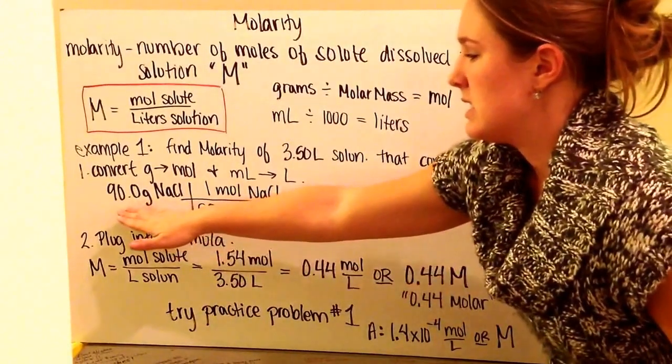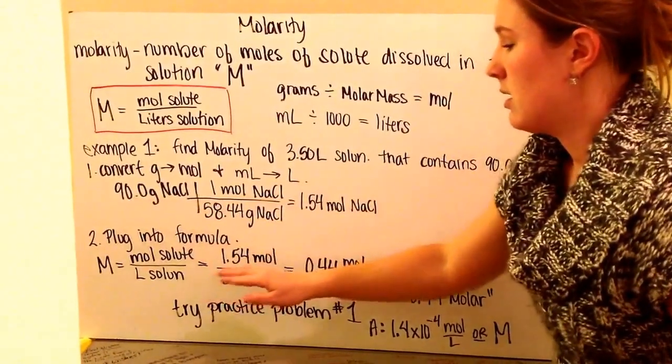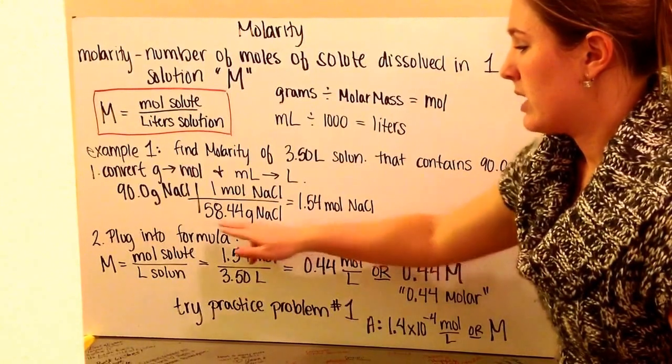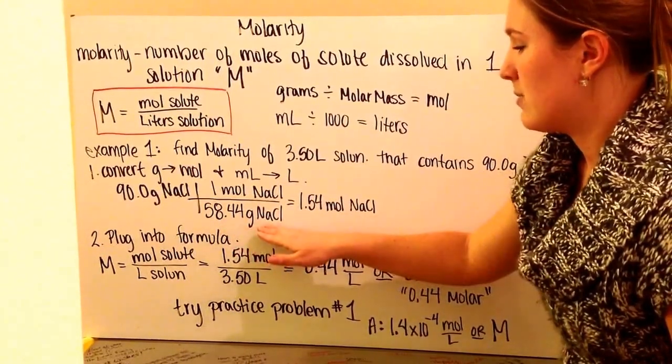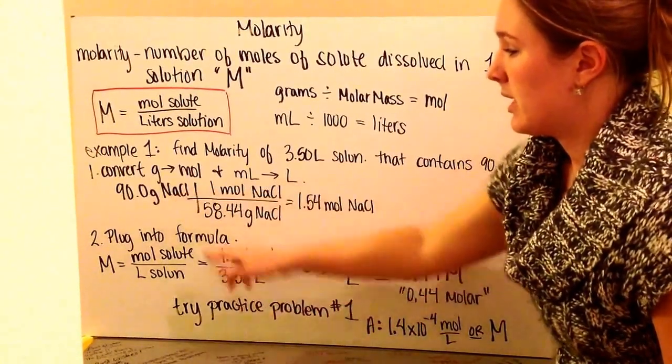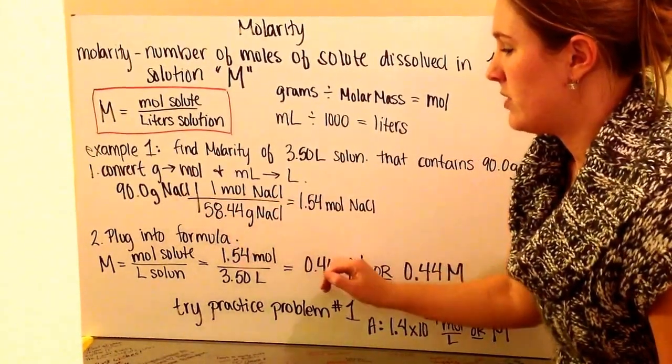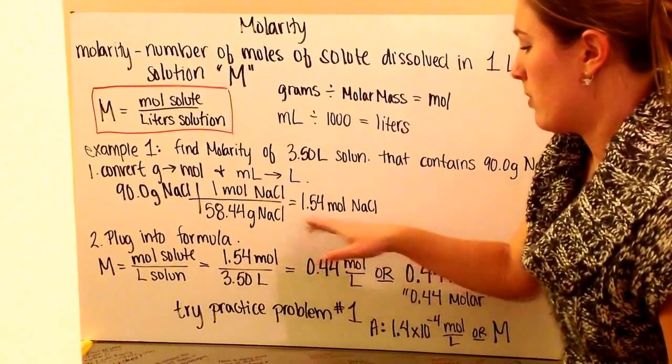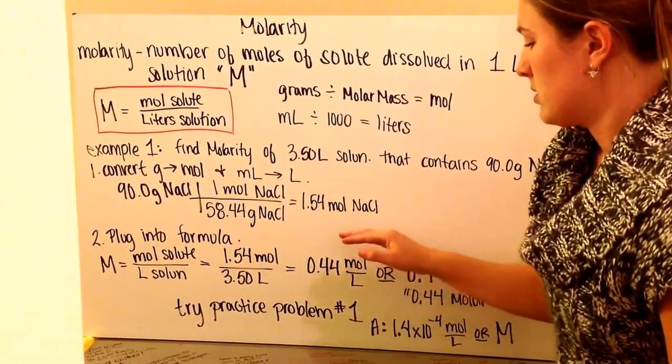I'm given 90 grams of sodium chloride. The molar mass of sodium chloride is 58.44 grams per mole. When I plug this into my calculator, 90 divided by 58.44 gives me 1.54 moles of sodium chloride.